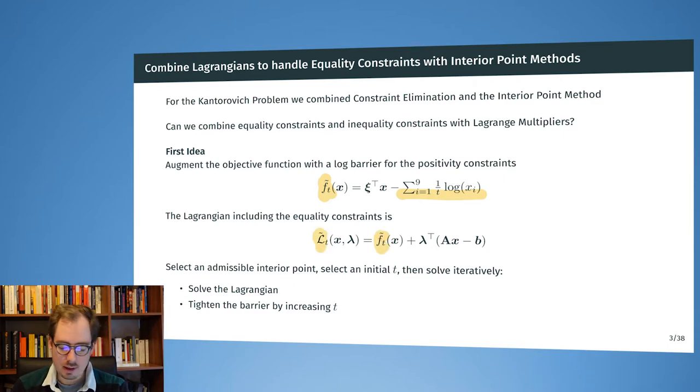And then also that contains the logarithmic barriers depending on some parameter t where we can increase the tightness of the barrier. And we can think, okay, instead of f let's just plug f tilde into our Lagrangian and then we will get some Lagrangian tilde that is then also parameterized by little t. And we can just iteratively solve the Lagrangian and then increase t, solve the Lagrangian and so on.